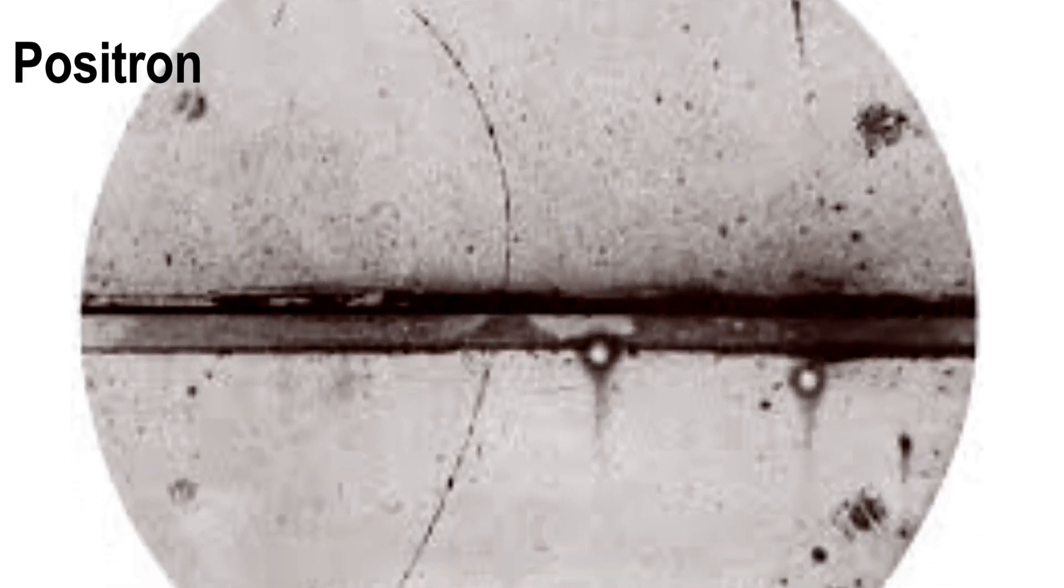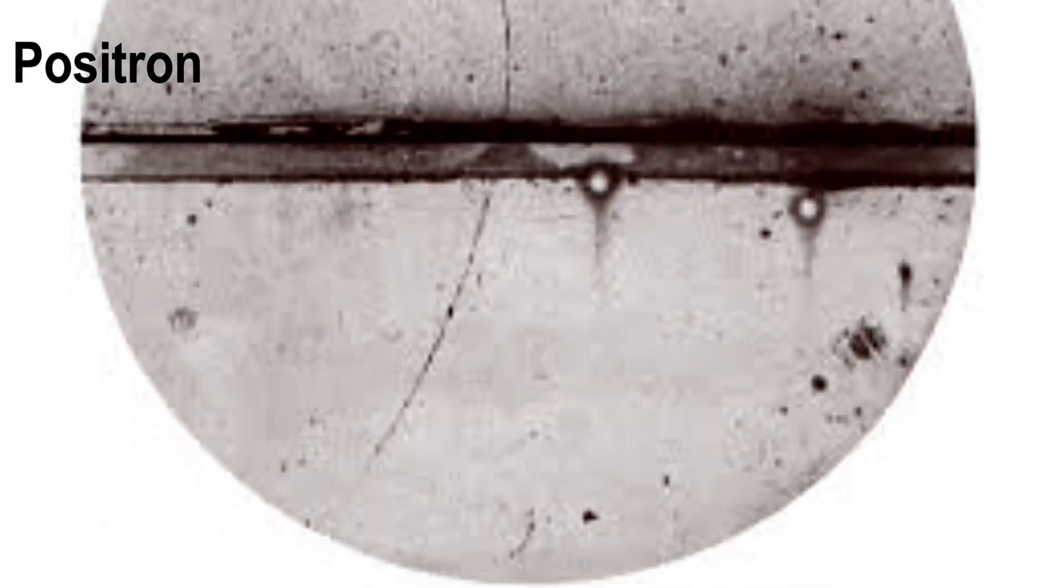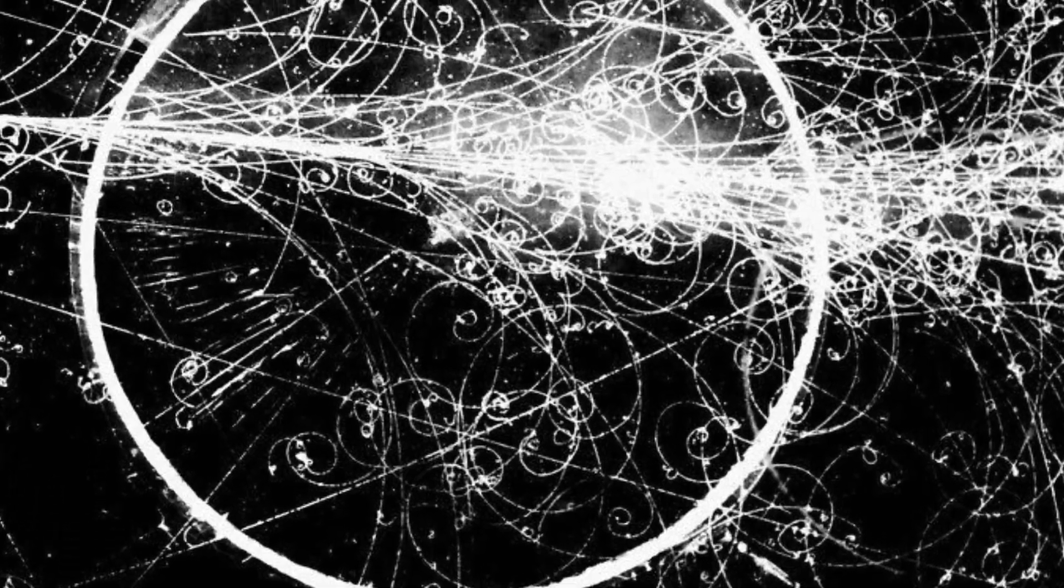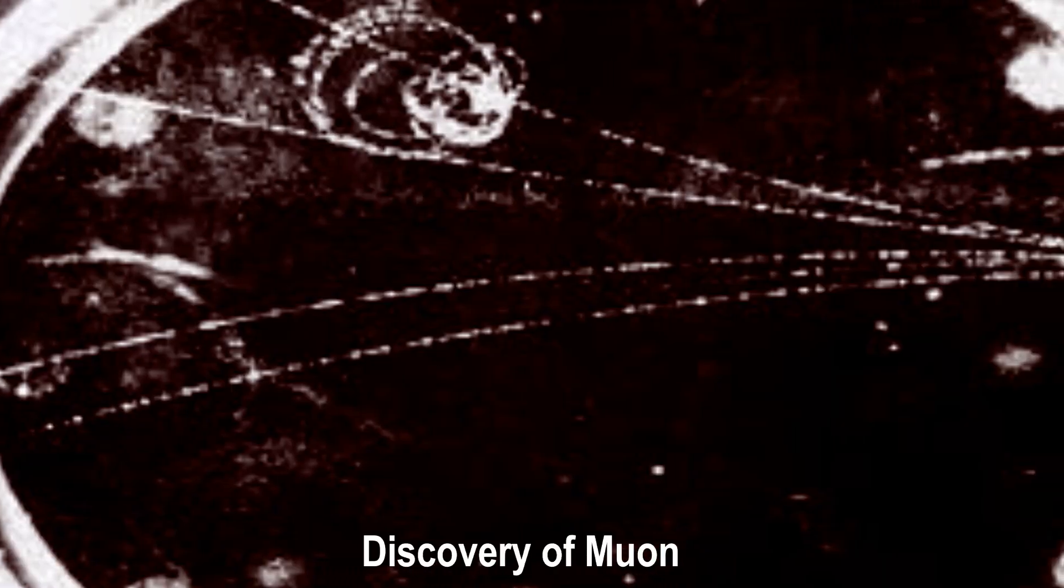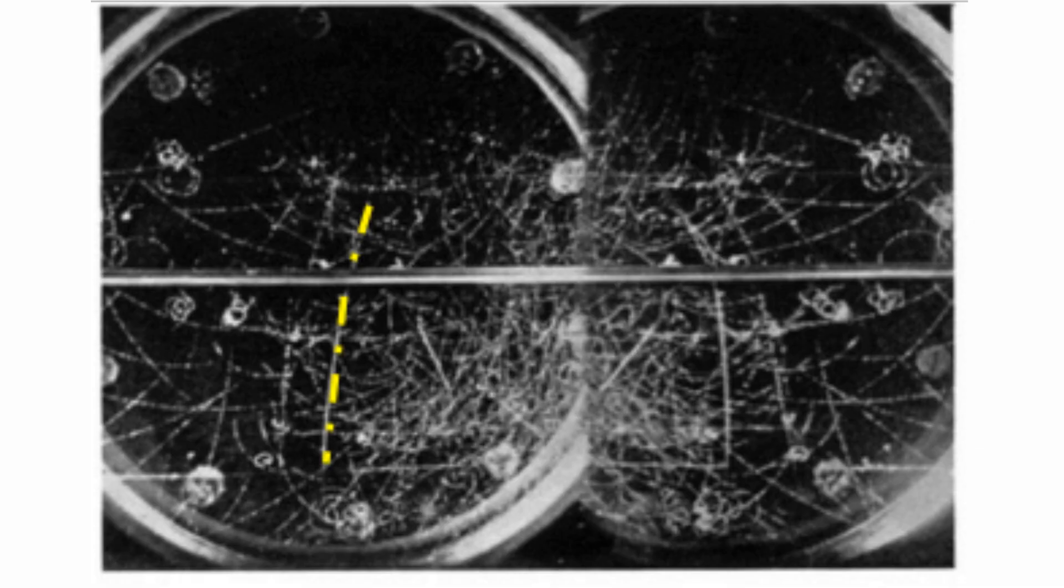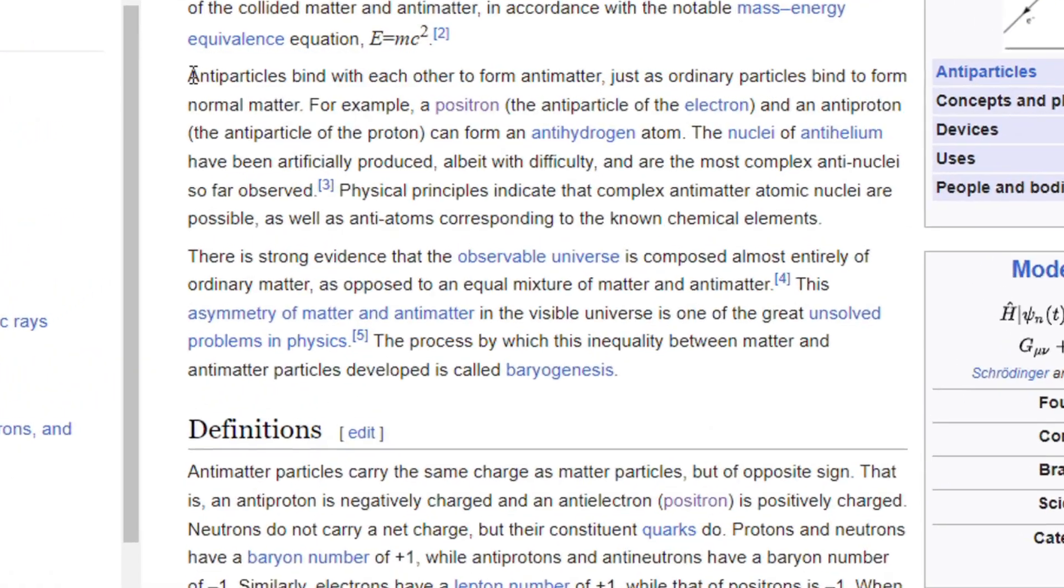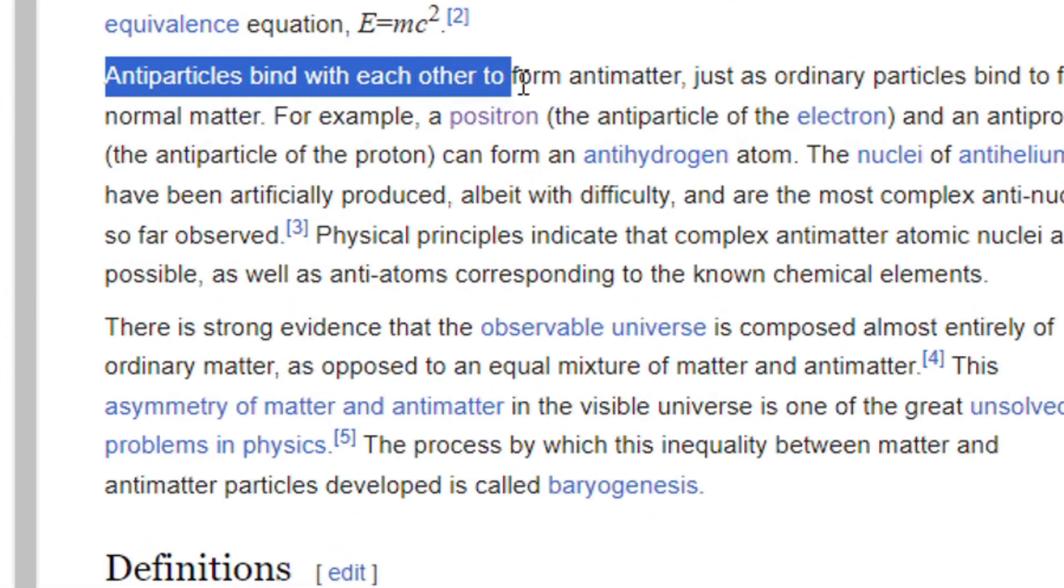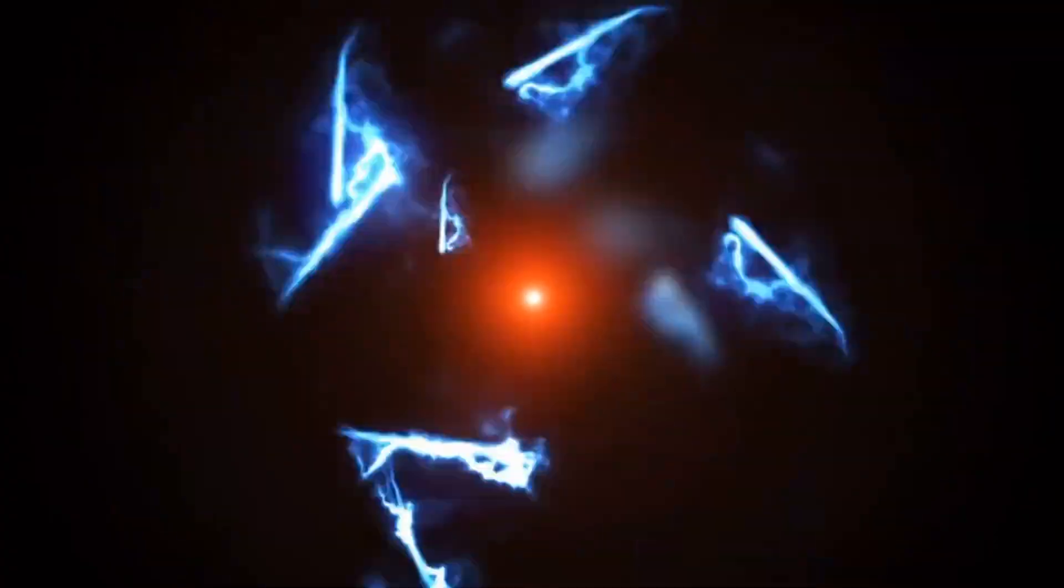Similarly, muons were discovered. Muons are just electrons but on steroids, that is, it has more mass than electron. Later these particles are considered as antimatter. Like this, the cloud chamber has played an important role in the history of particle physics.